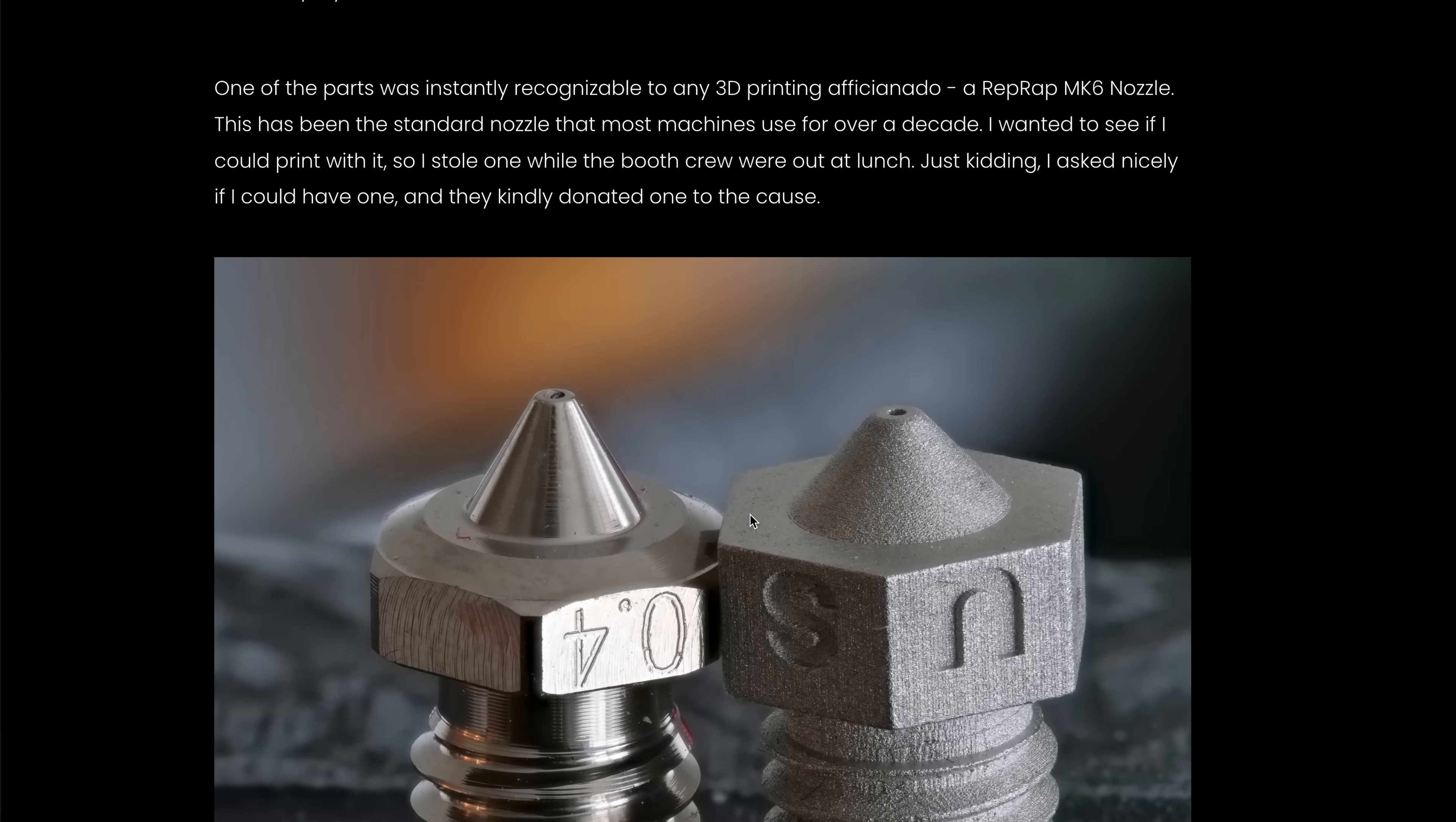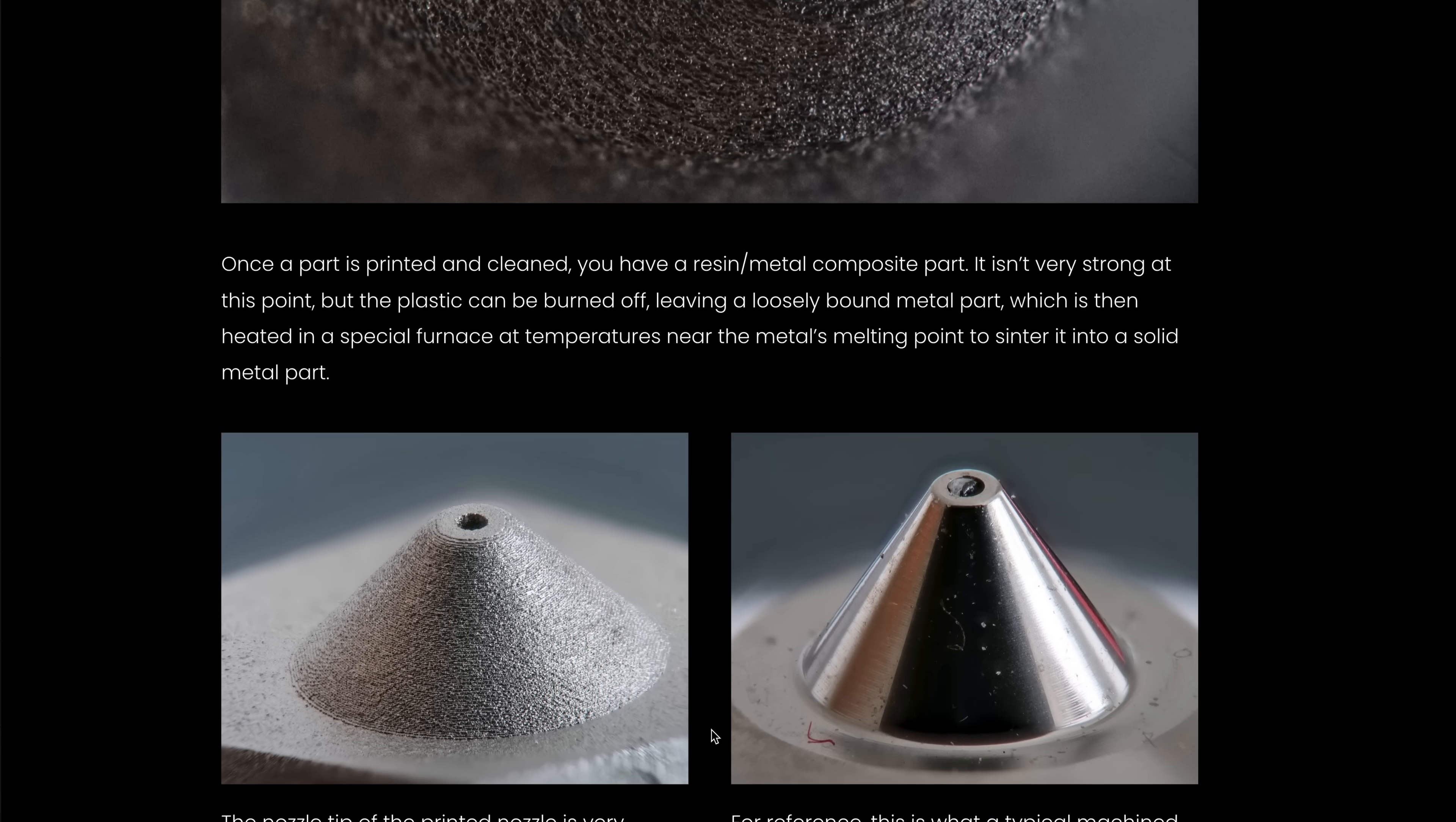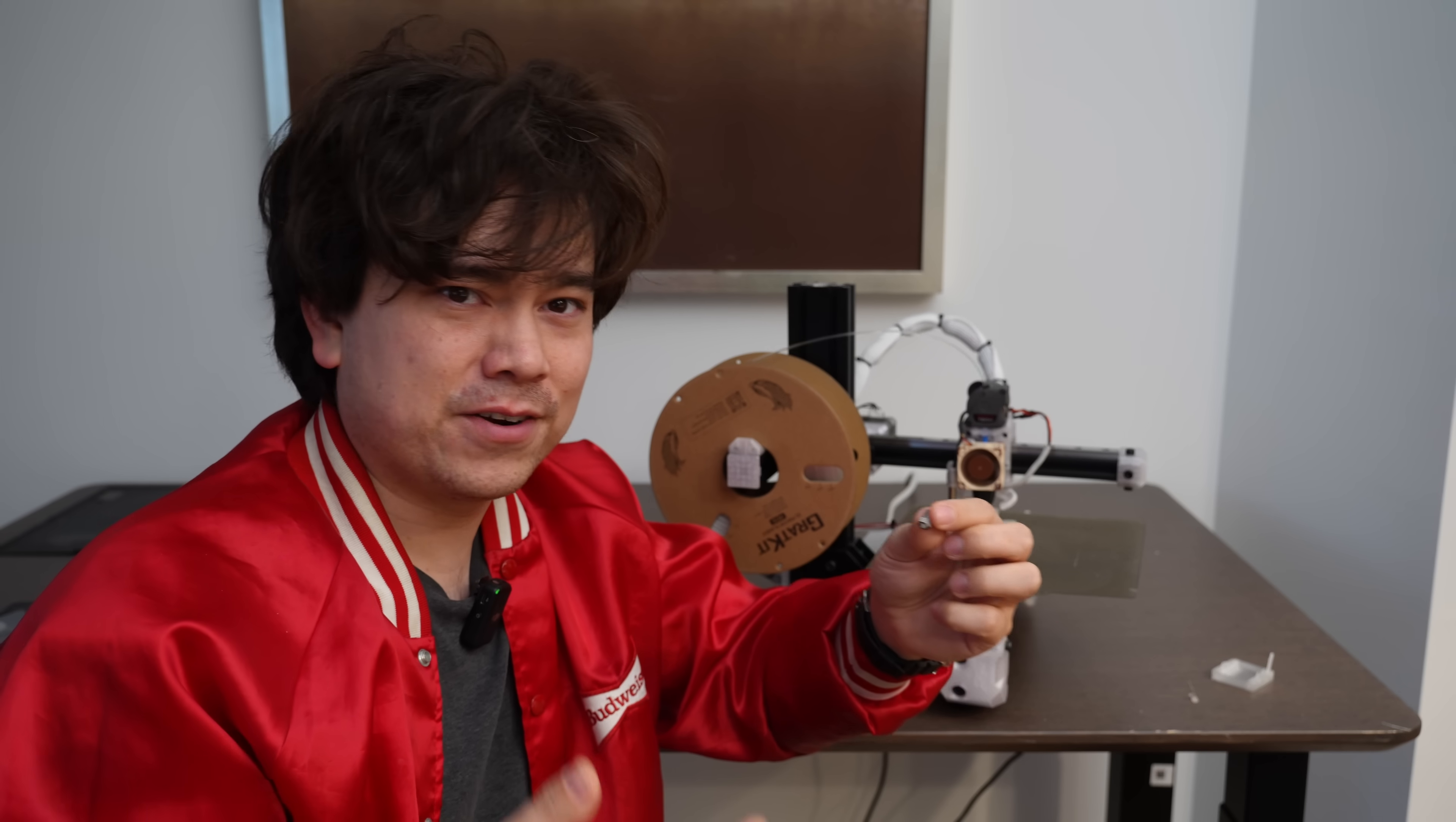Once they're finished printing their parts, they rinse away all of the uncured paste, burn away the UV cured resin, and then they put it through a sintering process which heats this loosely bound part until the individual metal particles fuse together. And the result is this.